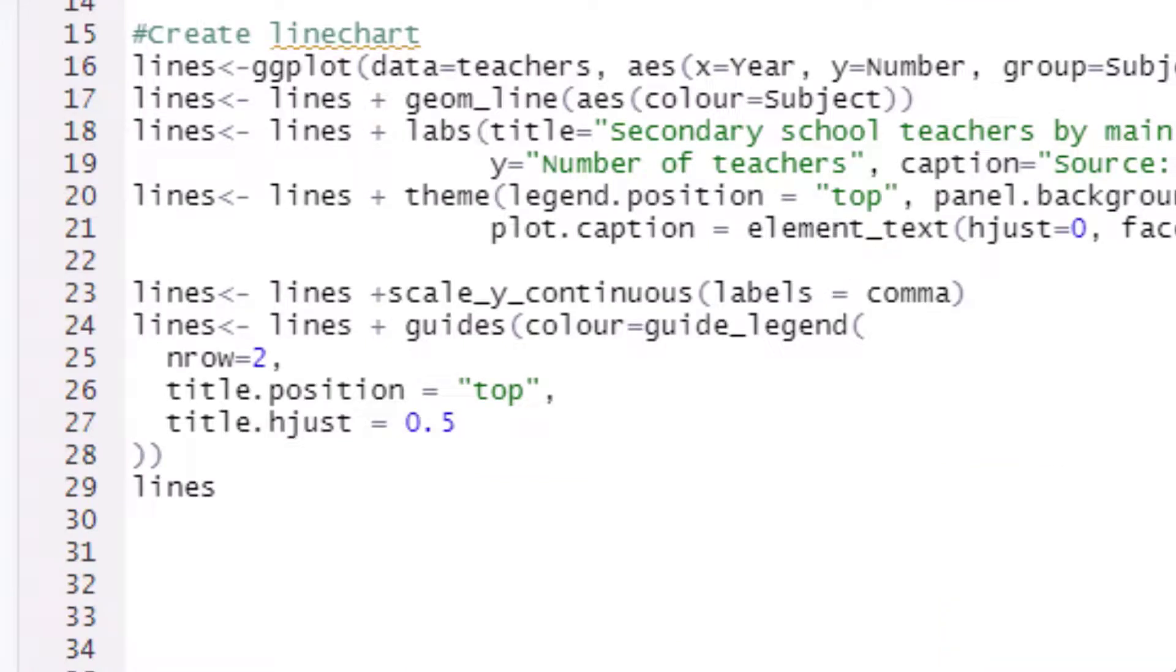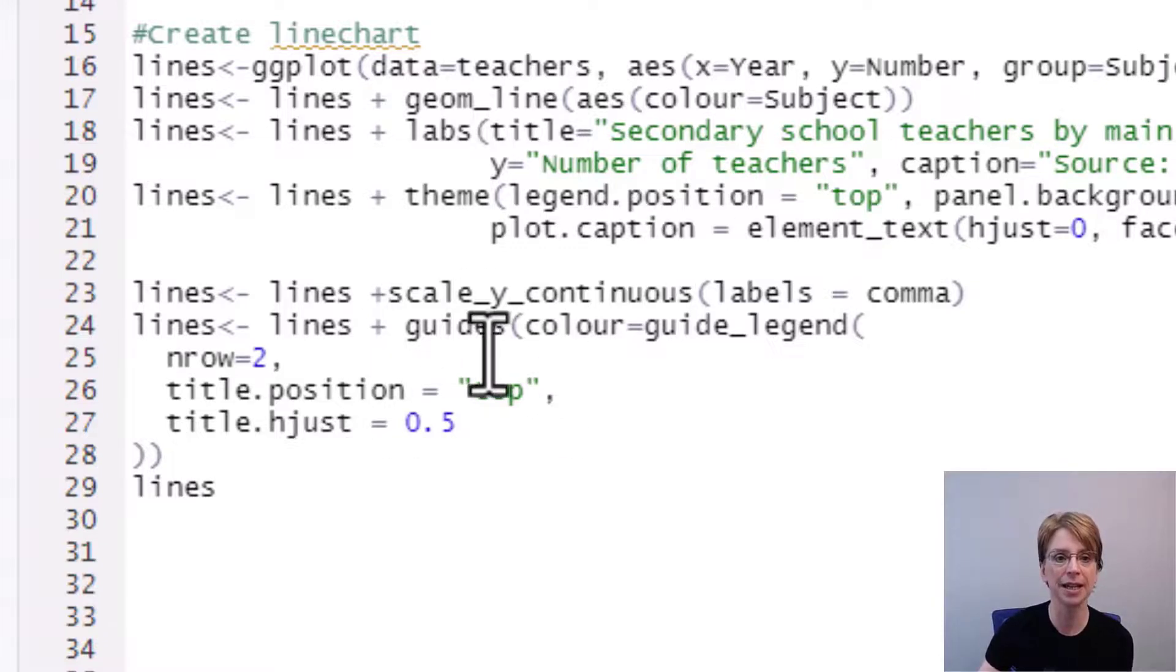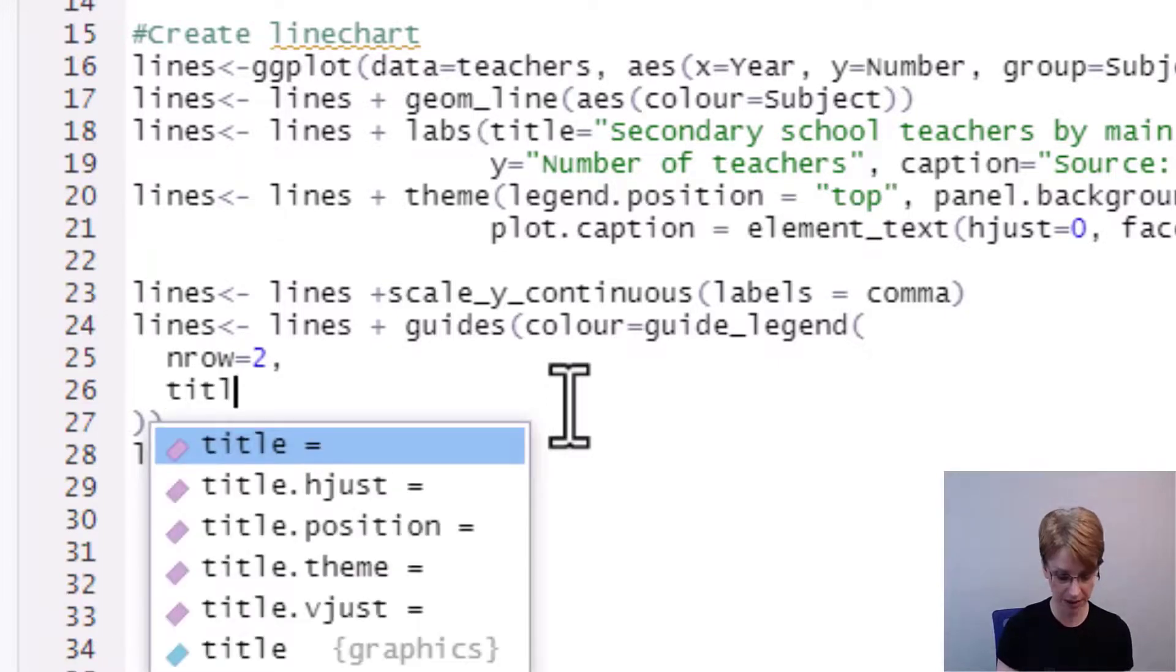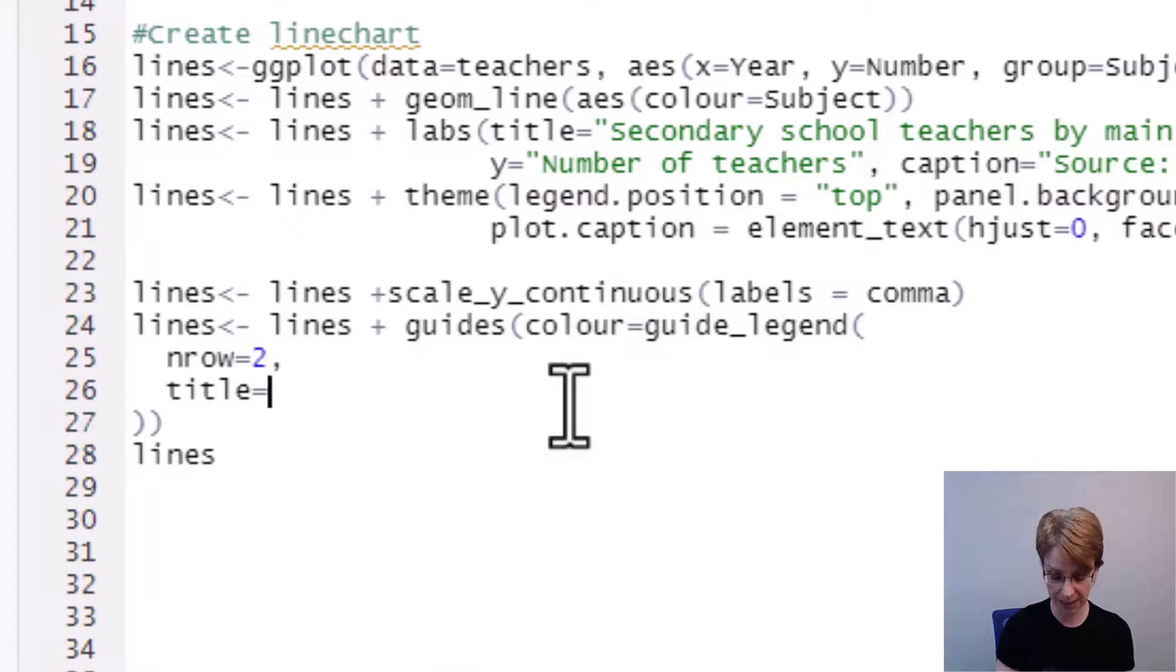Earlier in this video I showed you how to remove the title from the legend in the theme section now I will show you an alternative way to remove the title in the guide_legend section so if I go back into my guides section in my guide_legend I'll remove the two title rows and instead to remove the title all I need to do is do title equals and then null.